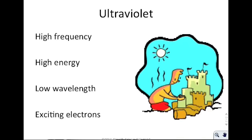Ultraviolet has a higher frequency, higher energy, and lower wavelength than visible light, and it can also be used to excite electrons. Ultraviolet radiation can actually excite electrons to a higher level than traditional light because it has higher energy.